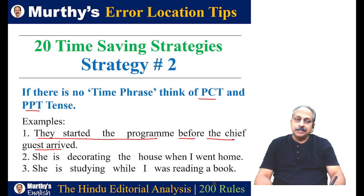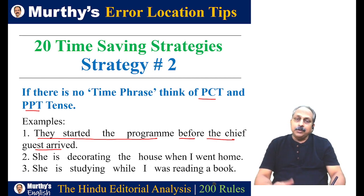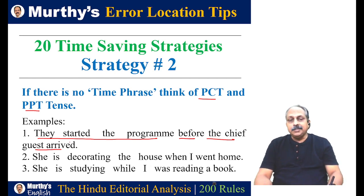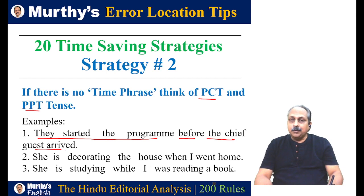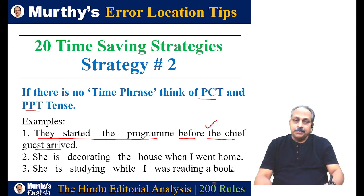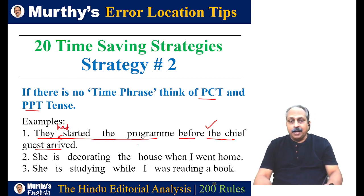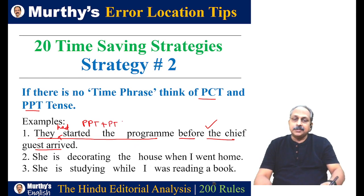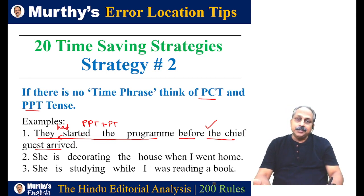We use past perfect tense when two actions happened in the past one after the other. For the first action, we use past perfect; for the second action, we use past tense. Here, 'they started the program' is the first action — it should be in past perfect. 'The chief guest arrived' is the second action, which is correctly in past. So the correction is: 'They had started the program' — past perfect. The combination is past perfect plus past tense.